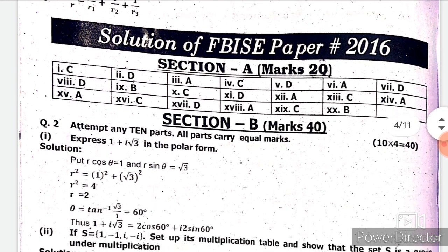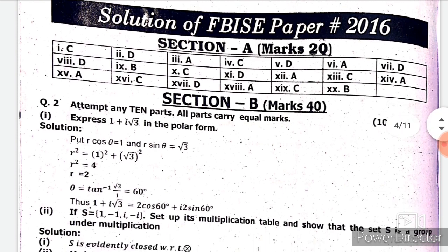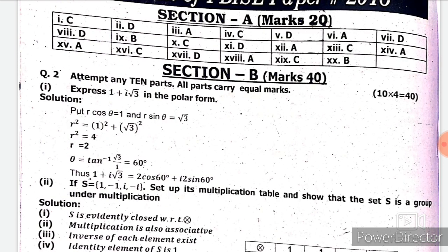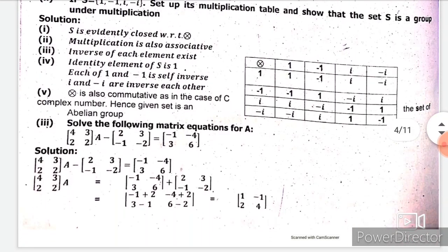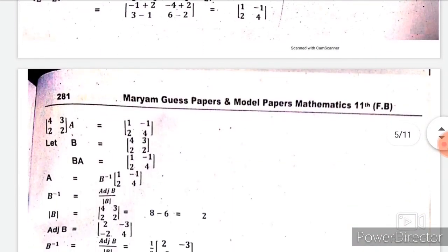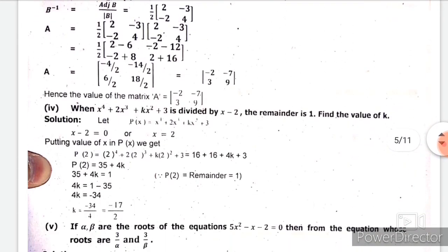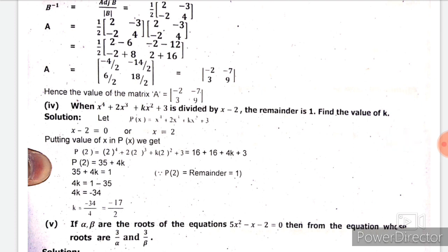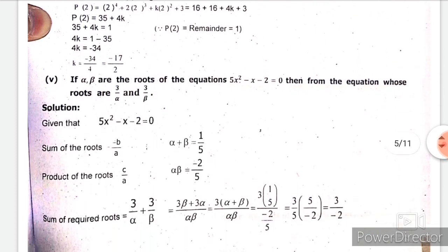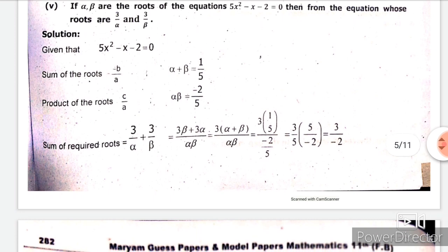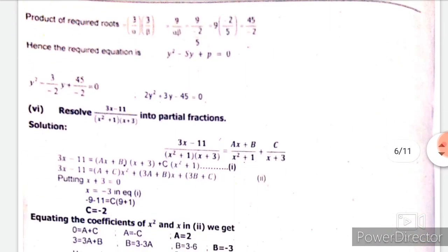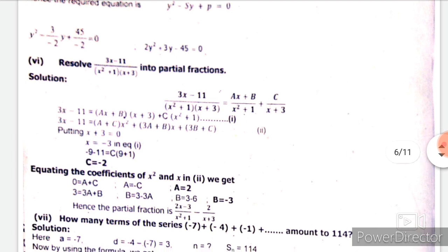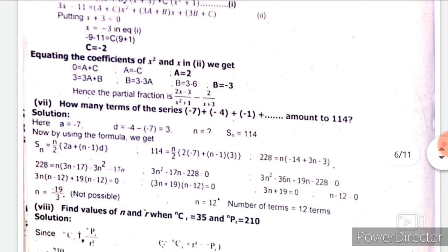In Section B, question number two: part one is from Chapter 1, part two is from Chapter 2, part three is from Chapter 3, part four is from Chapter 4, part five is from Chapter 4, part six is from Chapter 5, and part seven is from Chapter 6.